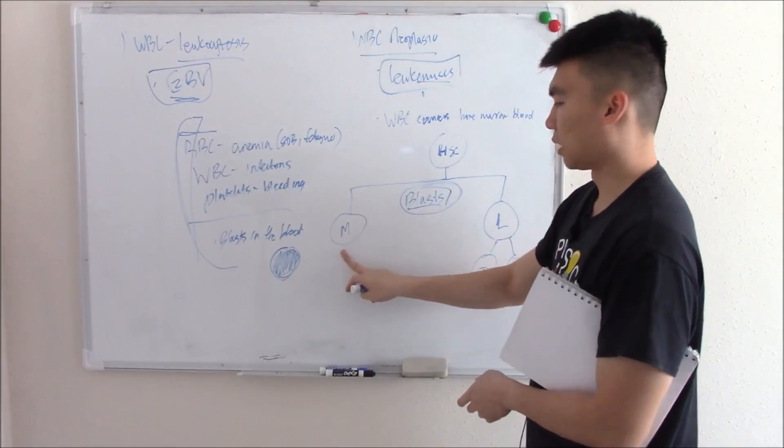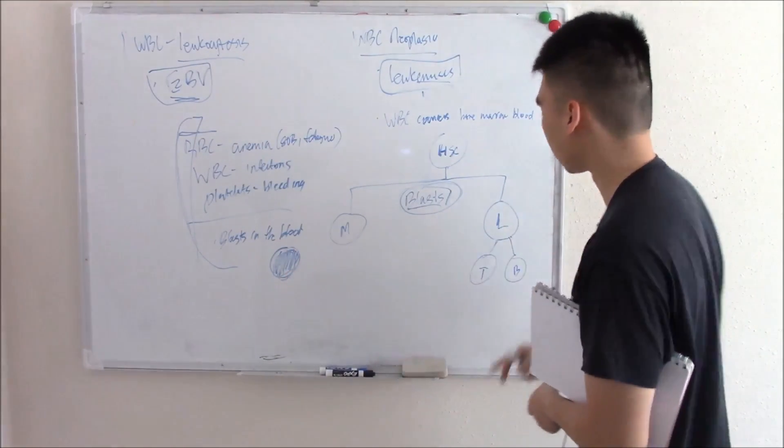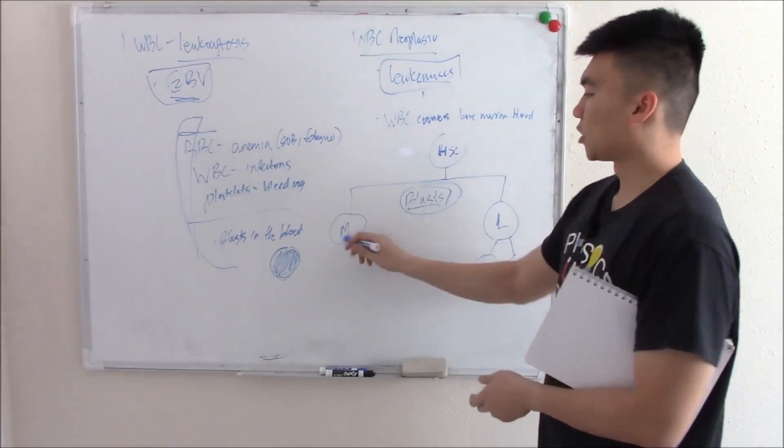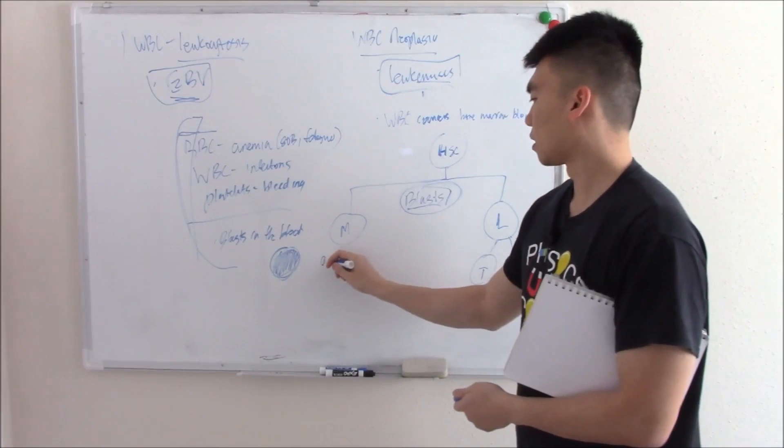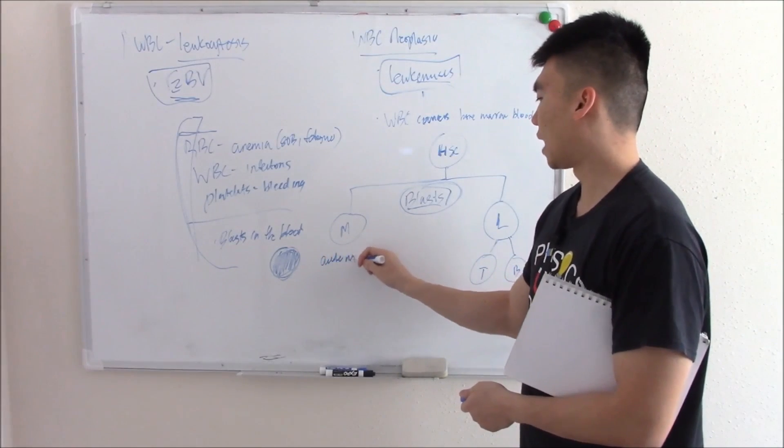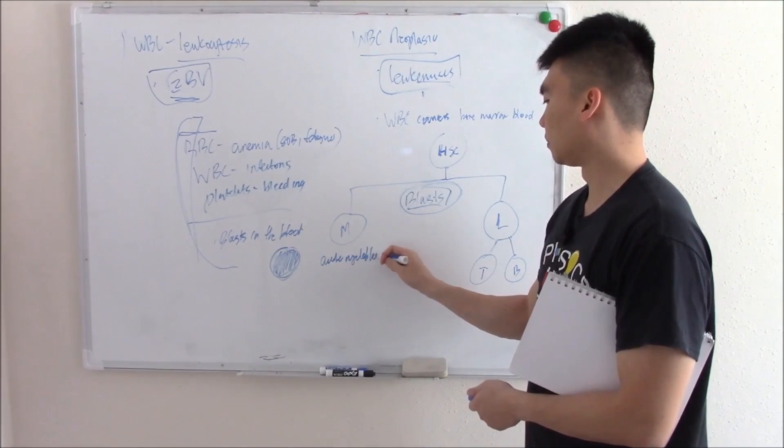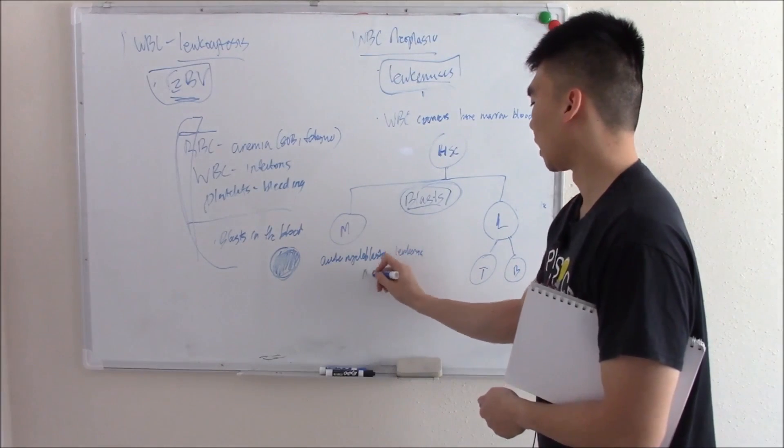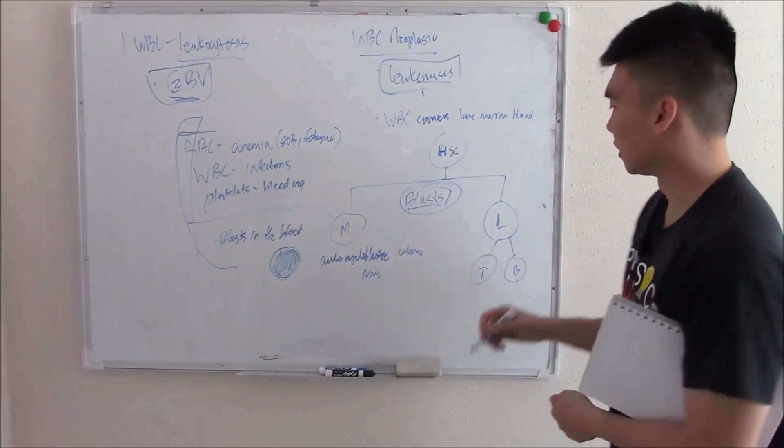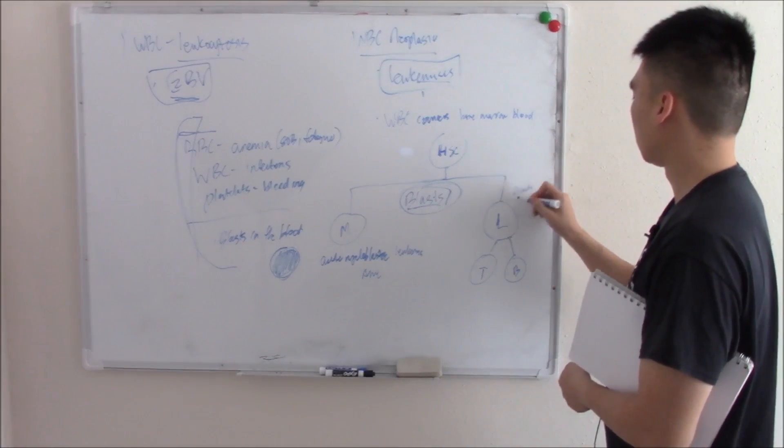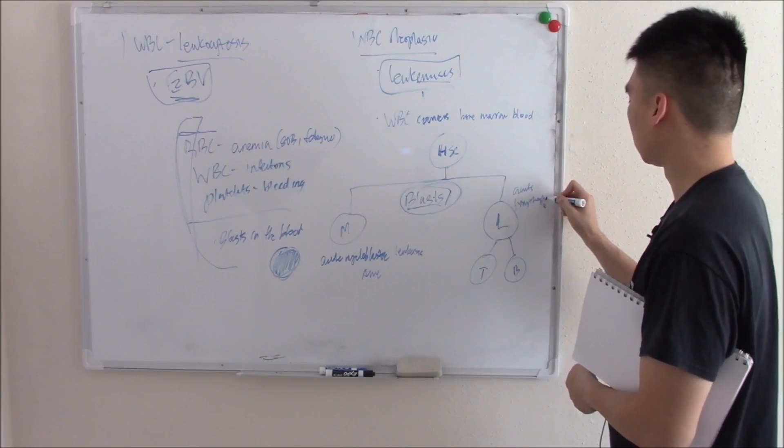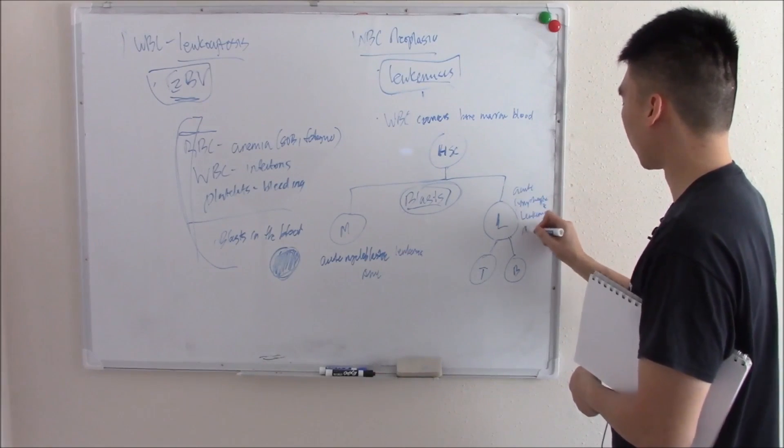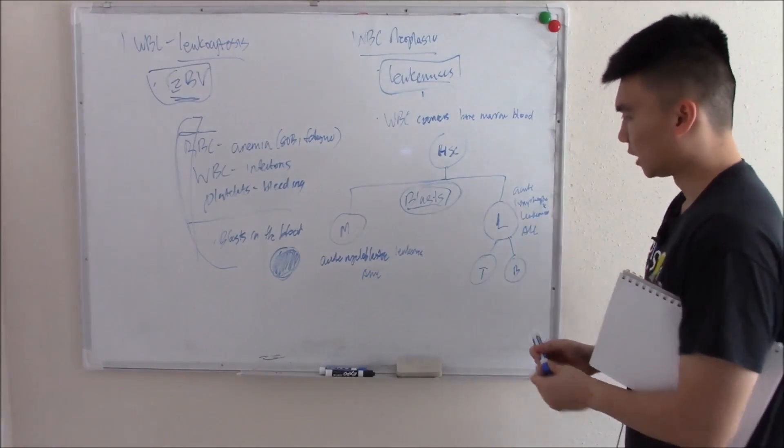How do we know if these blasts are myeloblasts or lymphoblasts? We need to know because acute myeloblastic leukemia or AML is way different than acute lymphocytic leukemia or ALL. These two are different.